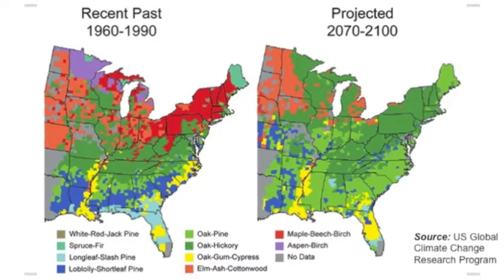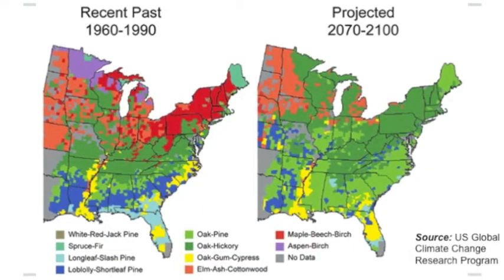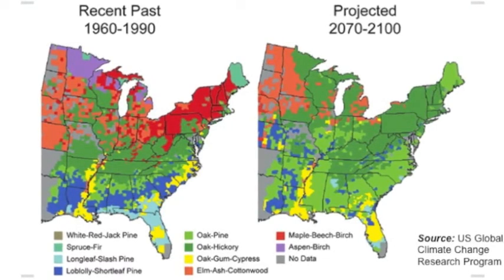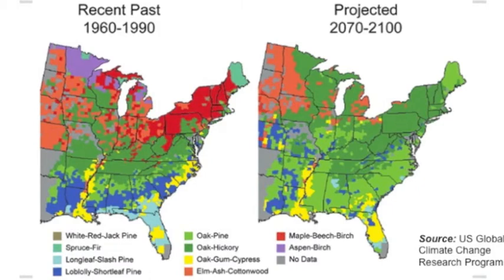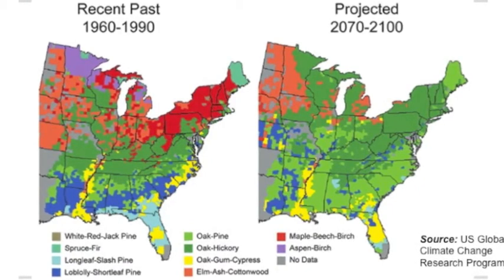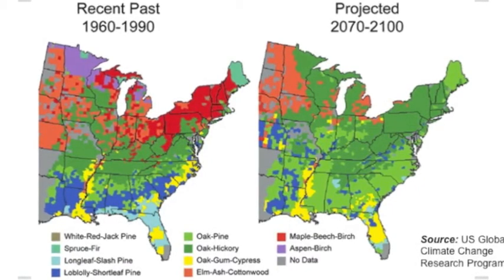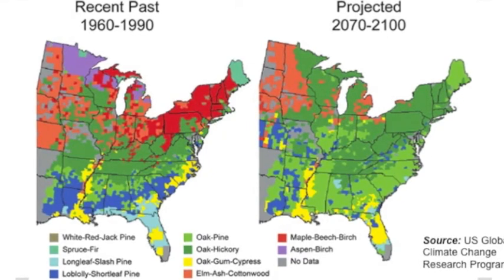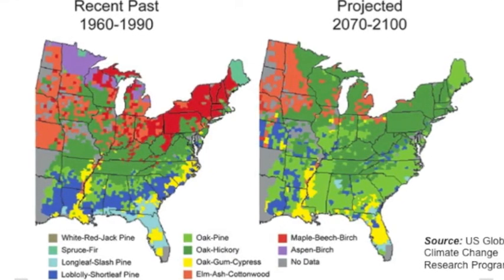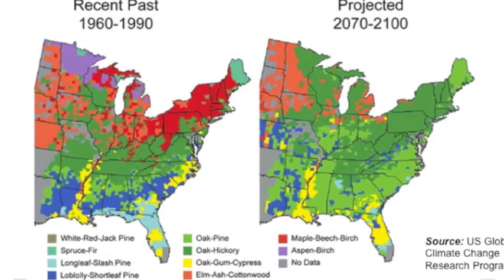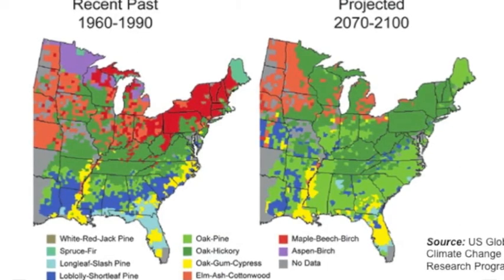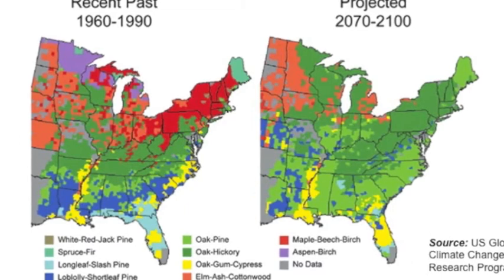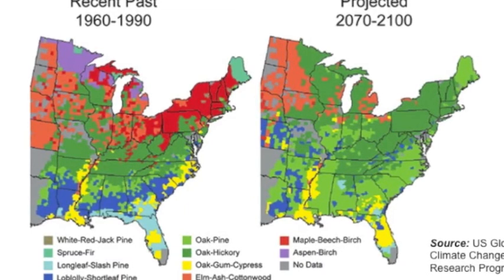It is even more important to understand microbes because we are experiencing significant changes to our climate. As evident in this map from the U.S. Global Climate Change Research Program, the distribution of species of trees is changing drastically. As evident in the projected image of 2070 to 2100, the composition and diversity of trees, especially in the northeast region of the United States, is shifting to a dominance of oak pine and oak hickory, which will result in changes in the microbial communities present also.